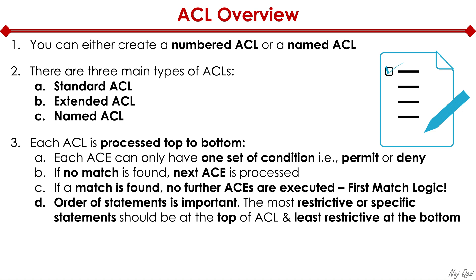Order of statements is important in an ACL. The most specific or restrictive statements should be at the top of the ACL, and the least restrictive — or more general — should be at the bottom. The reason it's important is that an ACL is literally a list, and whatever is at the top has the highest level of importance because it gets processed first.